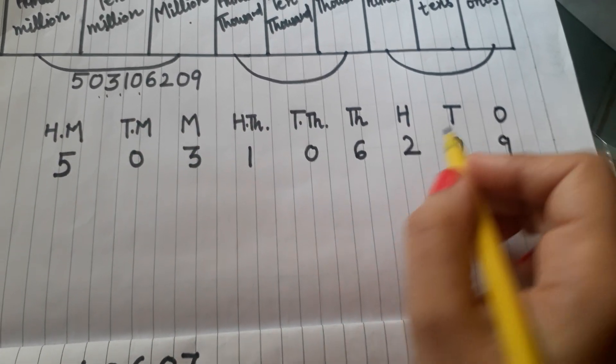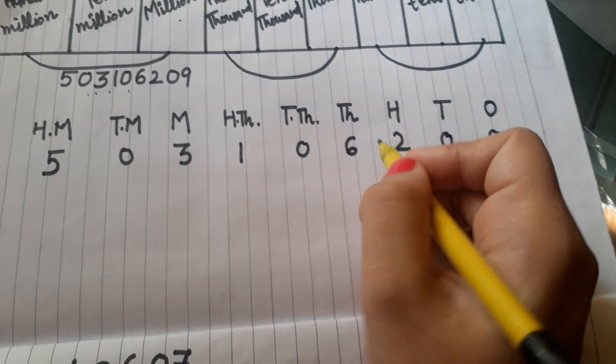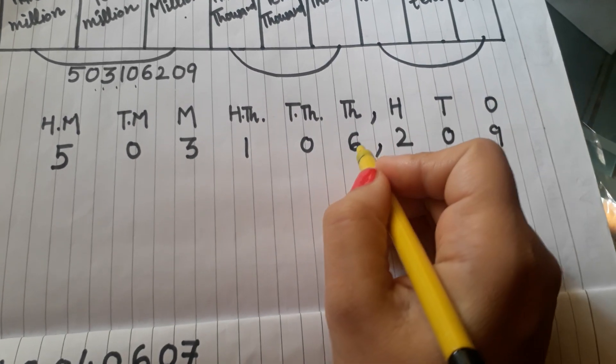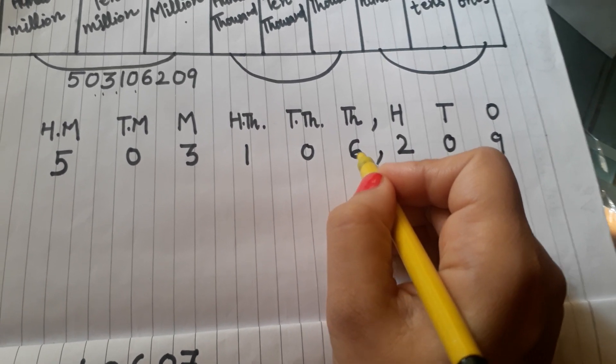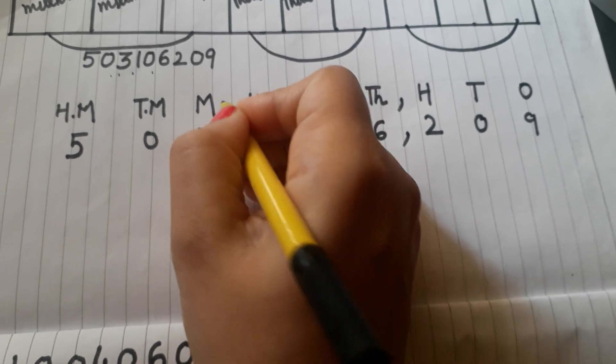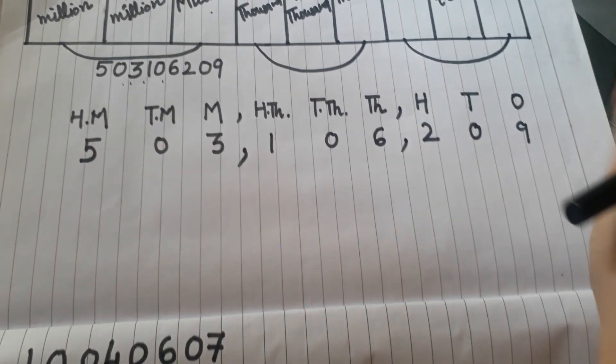As we know there are 3 families. Ones, tens and hundreds - that's one family. Now we will put a comma here. After that is the thousands family: thousands, ten thousands, hundred thousands. Then last is the millions family.